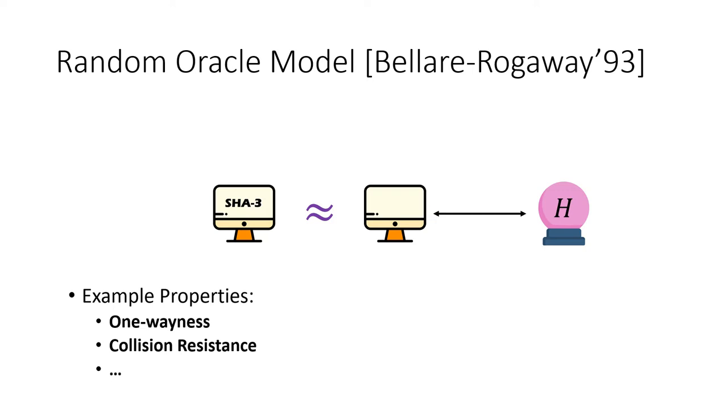Random oracle models assume the best way you can use an ideal hash function is by looking at its input and output behaviors, nothing about its code and structure. And the input-output behaviors are kind of random.